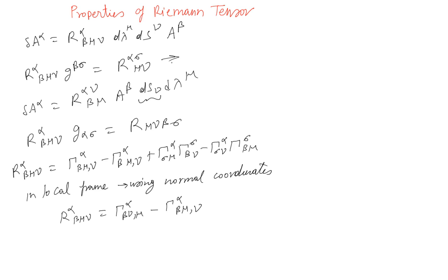If you do that, you can actually see that R alpha beta mu nu equals half g alpha nu comma beta mu minus g alpha mu comma beta nu plus g beta mu comma alpha nu minus g beta nu comma alpha mu.